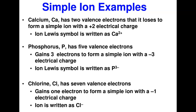Simple ion examples: calcium has two valence electrons (group 2A) and loses both to become Ca²⁺. Phosphorus has five valence electrons and, being a nonmetal, gains three electrons to form a charge of −3, written as P³⁻. The ion symbol is written as the element symbol with the charge in superscript, with the sign.